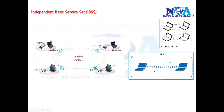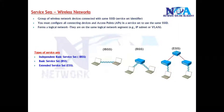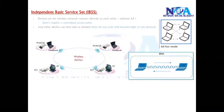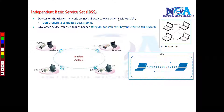Let's see some more points relating to the independent basic service set. In an independent basic service set, we don't use any access point, so there is no access point used. Any device can connect to any device, but they don't scale because you cannot go beyond 8 to 10 devices.